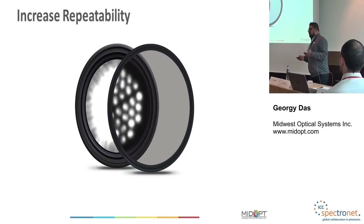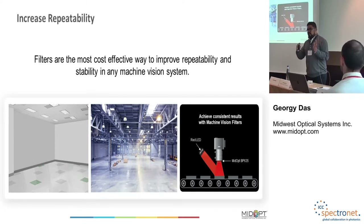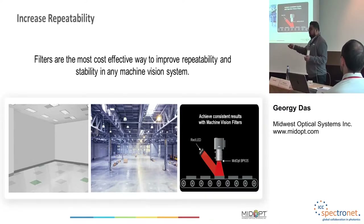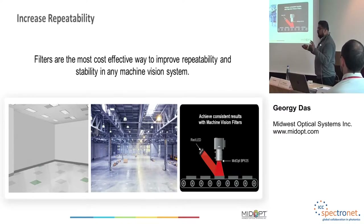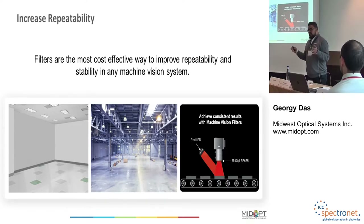Finally, we'll talk about repeatability. We call filters an inexpensive insurance policy. Oftentimes you set up an application in a lab environment and it works perfectly. But then you move it to the customer floor or factory floor and things stop working — because there are windows, lights, and people walking around that you weren't aware of. But if you had used a filter from the very beginning — from your testing phase — you're controlling what light is entering the system and controlling the effects of ambient light. Regardless of the environment, if you use a filter, you can ensure the application is going to work.